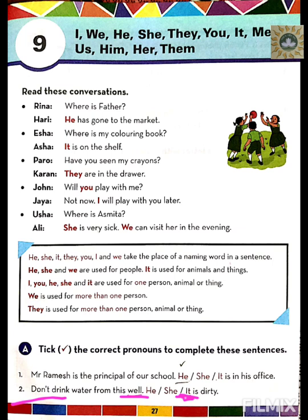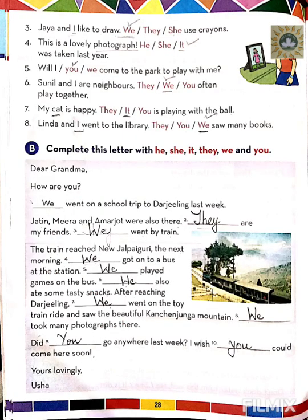Number three: Jaya and I like to draw — dash — use crayon. Since there are two of us, the answer is 'we.' So: Jaya and I like to draw. We use crayons.